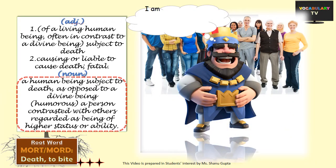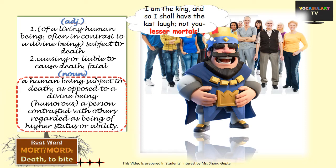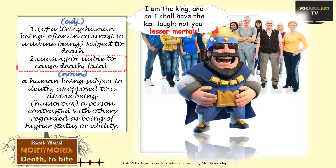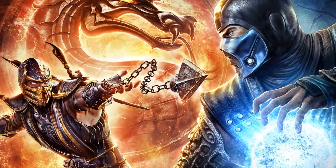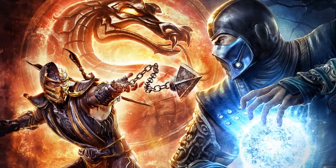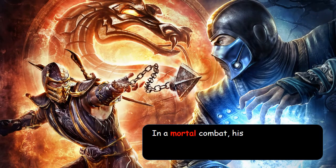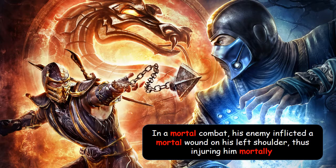An example would be a king talking to his subjects: 'I am the king and so I shall have the last laugh, not you' — calling them lesser mortals. In another meaning, 'mortal' can describe something which is fatal and can cause death. For instance, in a mortal combat, his enemy inflicted a mortal wound on his left shoulder, thus injuring him mortally.